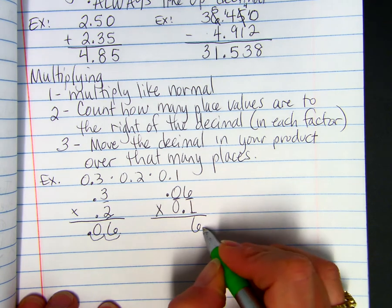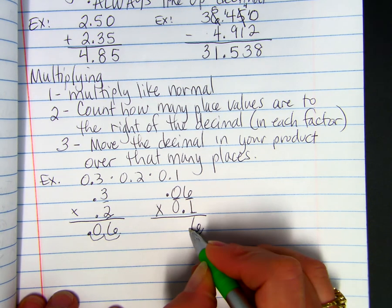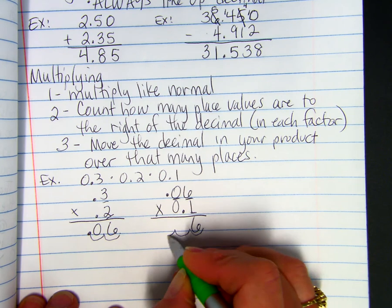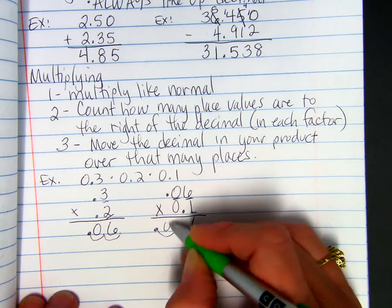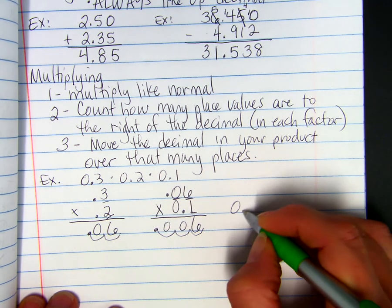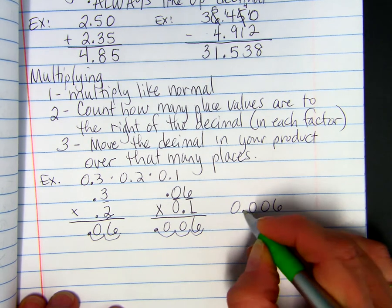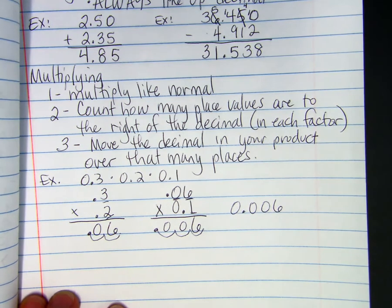So, we're going to move the decimal from the far right side on the six three times over. One, two, three. Put my decimal, which means you're going to need two zeros to the right of the decimal, then a six. So, six thousandths.